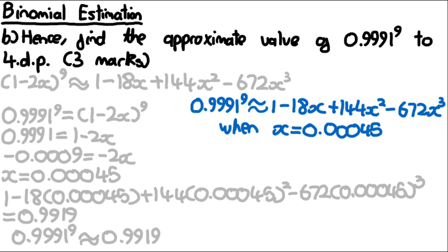This only works because x is a small value. If x were equal to something like 2, using just the first four terms would not give a good approximation to the full expansion. We'll discuss this more in the year 2 binomial expansion topic, which is chapter 4 in year 2.